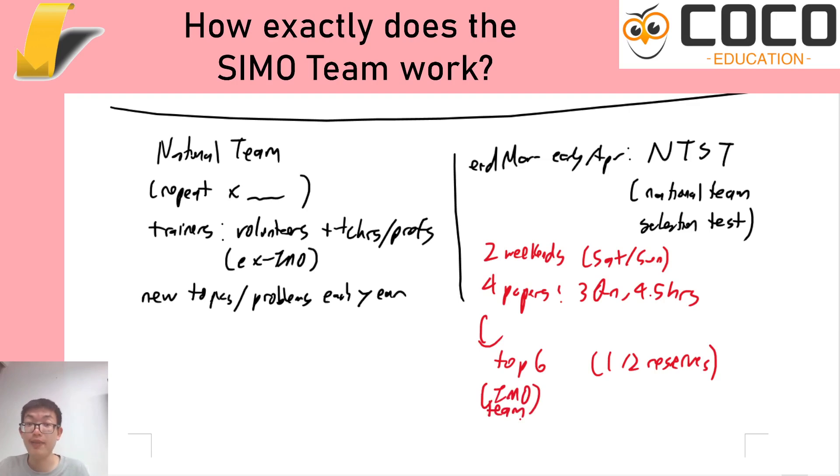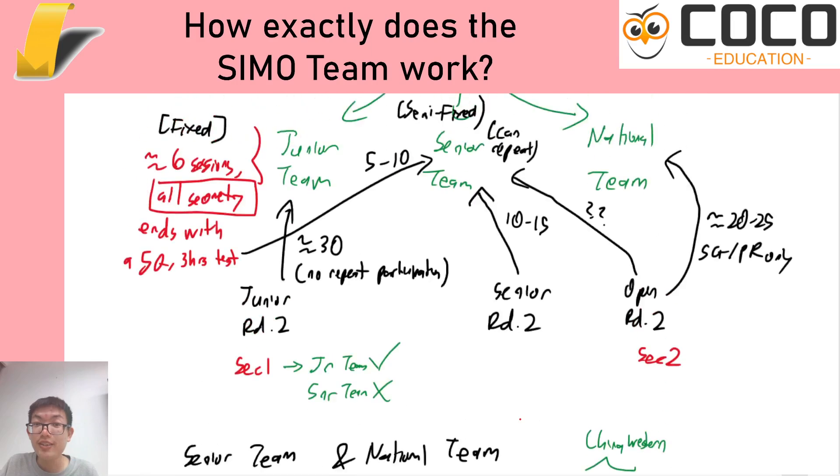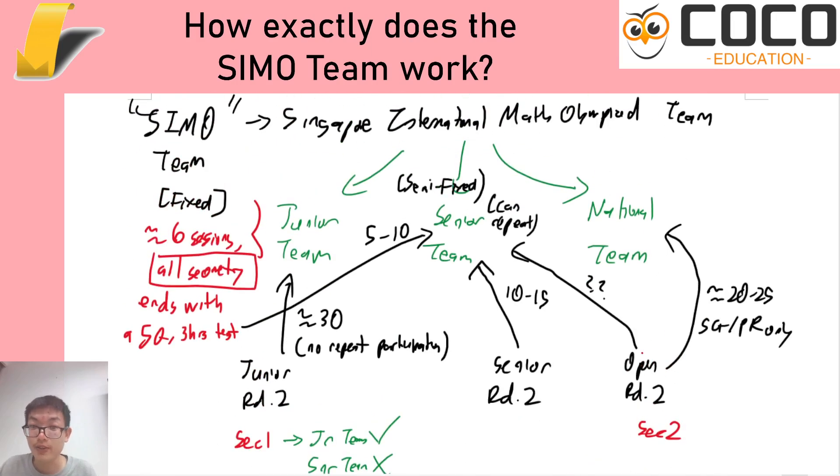As you can see, this is early April, right? So the cycle repeats. After the National Team Selection Test in early April, they will have selected the IMO team. And then for everyone else in the national team, you need to re-qualify—you need to re-qualify through the open round two again. So it's not auto-renewal. For junior there is no repeats, for senior you need to qualify again, for national team you also need to qualify again.